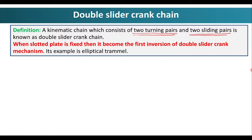The best example of double slider crank chain is the elliptical trammel. When the slotted plate is fixed, it becomes the first inversion of double slider crank chain mechanism. So in the case of elliptical trammel, the slotted plate is fixed, and when it is fixed we get the first inversion.